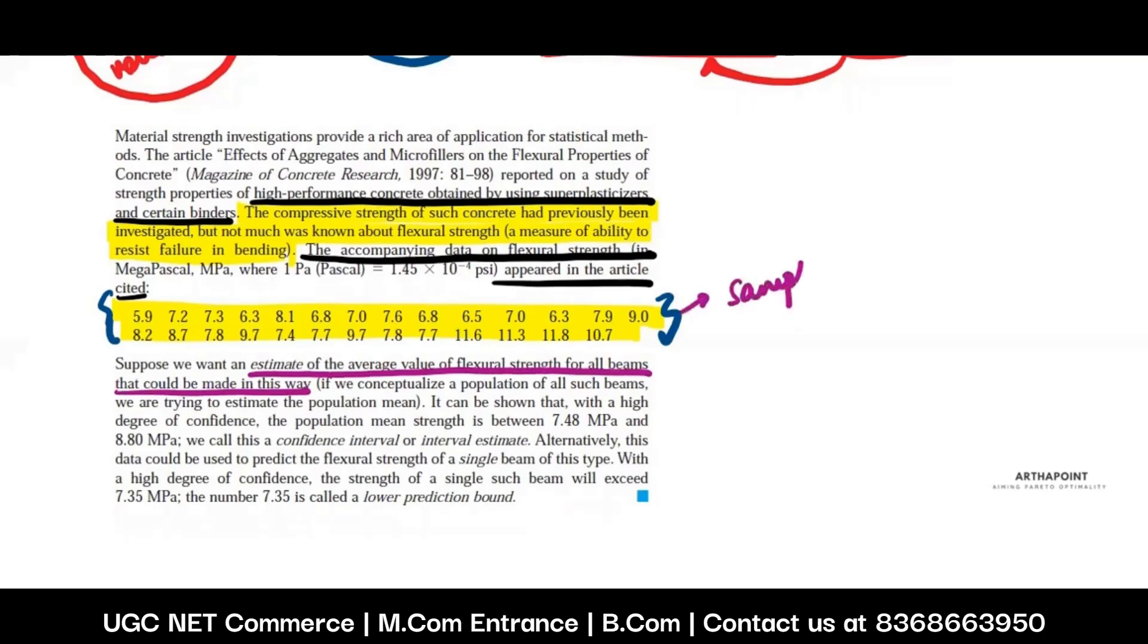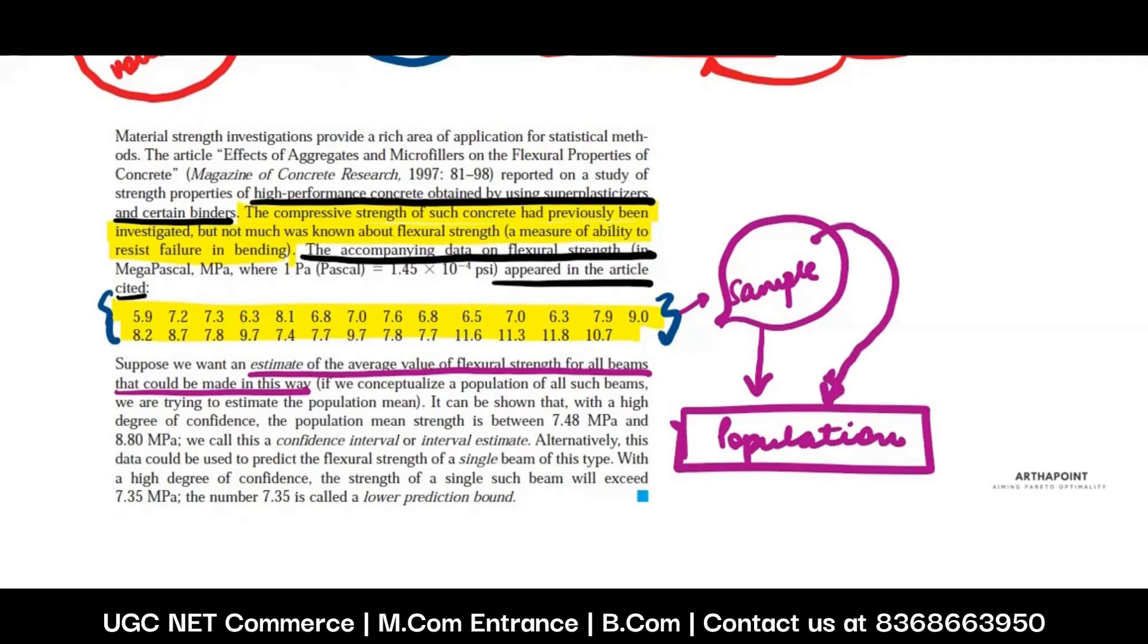Suppose you want an estimate of the average value for all the beams that could have been made this way. Remember, this is a sample. But based on what happened in the sample - whether it could bend much or not, whether there was failure in bending - I want to create information about the population. I want to understand what the strength would be in the population. Whenever I infer information from sample to population, you generate something which is known as an estimate. Estimate can be of mean, of standard deviation, of anything. By estimate, I mean I need some number for the population based on what is happening in the sample.